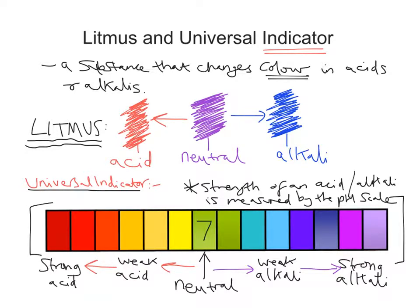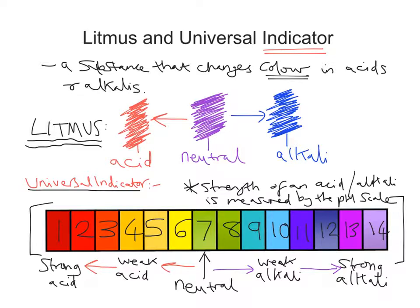The strength of an acid or alkali is measured by the pH scale, and each universal indicator colour is given a pH value. As you move towards the acid end, the number decreases — as the pH value gets lower, we get a stronger acid. As the pH value rises or increases, we get a stronger alkali. Questions often ask how the pH value changes if something becomes more acidic or more alkaline, so it's important to use the terms increase or decrease correctly. The pH value goes down as we get more acidic, and goes up towards 14 as it becomes more alkaline.